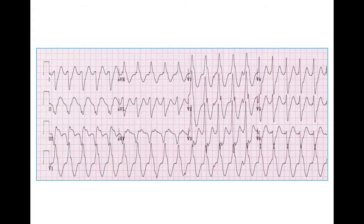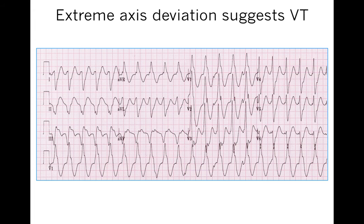Here's another example of a wide complex tachycardia. In this particular case, we see extreme axis deviation — the QRS is negative in leads 1 and 2. The axis is so far off that this cannot be coming from the atria or through the His-Purkinje system. This must be ventricular tachycardia.